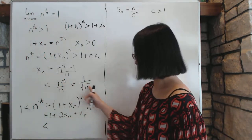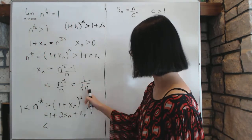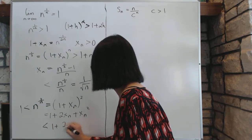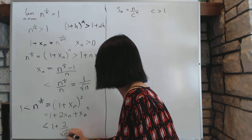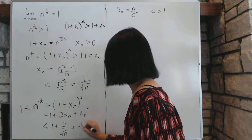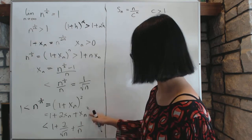plugging this inequality in here, xn is less than this thing, which is 1 plus 2 over square root of n, and then plus 1 over n, effectively, because you're squaring this.